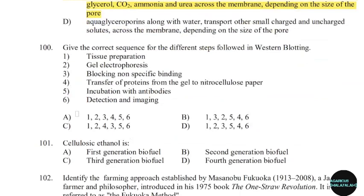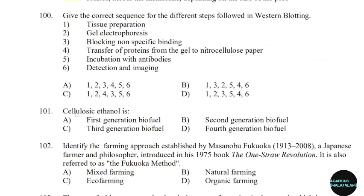100th question: Give the correct sequence of the different steps followed in western blotting. Correct answer: Option C — 1, 2, 4, 3, 5, 6.